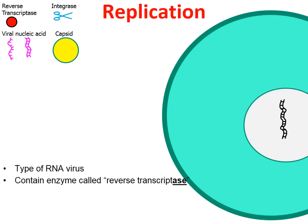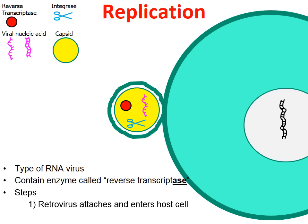and also an inner capsid that surrounds the nucleic acid and the enzymes. We're going to look at the steps that a retrovirus goes through in order to replicate. There's a key in the upper left-hand corner so you know what everything is in the animation. The process begins as the retrovirus attaches and then enters into the host cell.